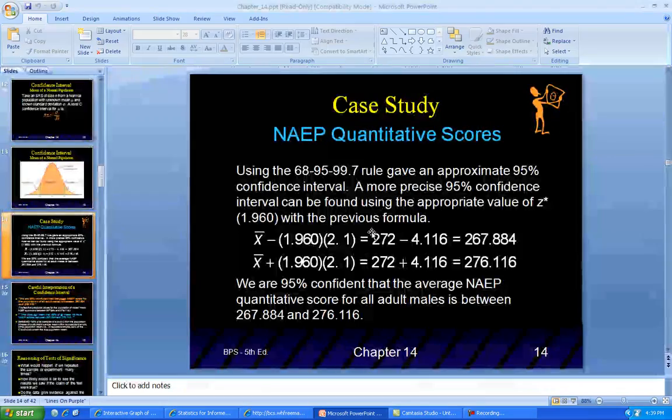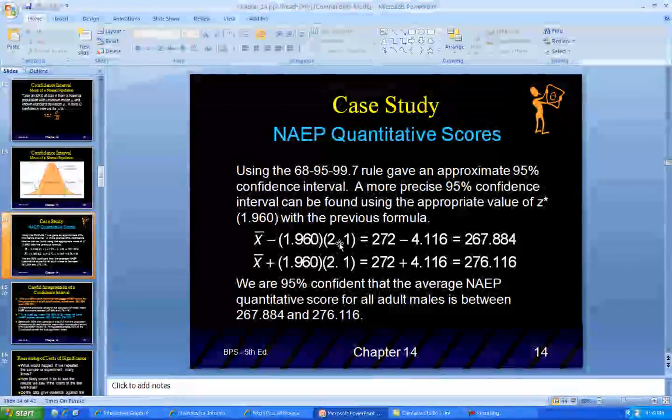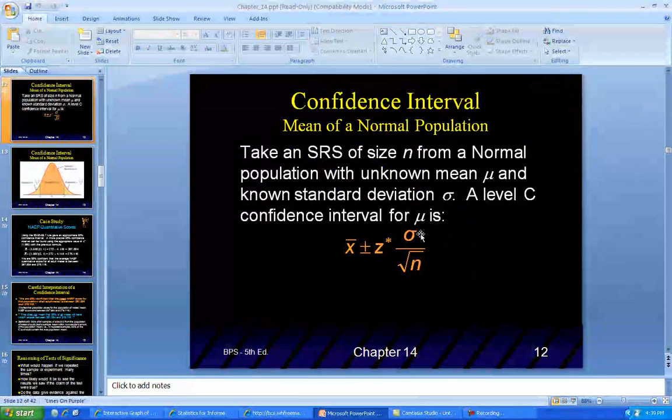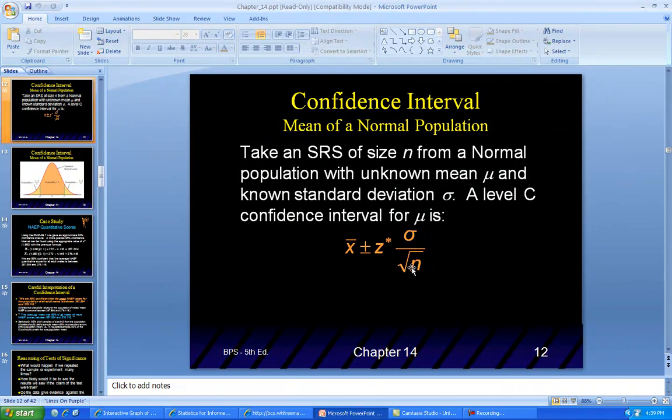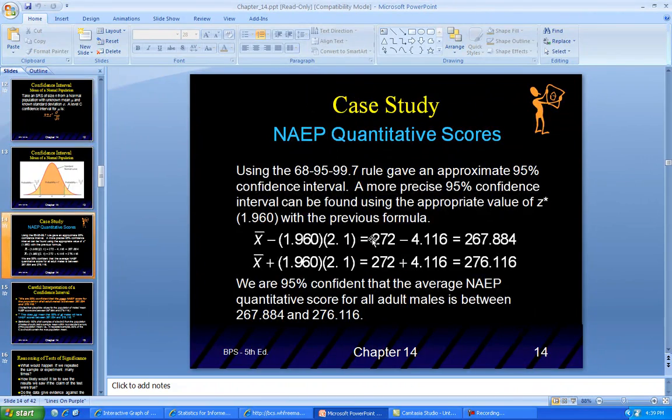You multiply by the standard deviation that we got. The standard deviation was found by taking the population standard deviation divided by the number of people we surveyed. We get 272, that's our mean, minus 4.116, so now it's even more of a number: 267.884.